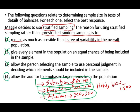Answer D: allow the auditor to emphasize larger items from the population. Yes — if you want to emphasize larger items, you want to stratify. Once you know the larger items, you can select from those. For example, you can combine hospitals and hotels. The reason you stratify is to make sure that once you put the population into subpopulations, you can select from those subpopulations emphasizing the larger items.